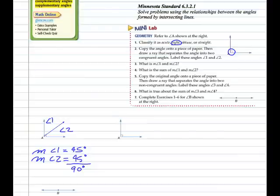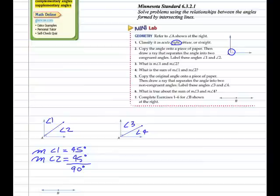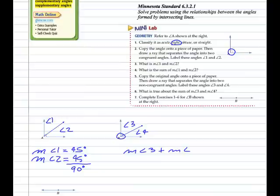Copy the original angle onto a piece of paper, then draw a ray that separates the angle into two non-congruent angles. Here's a copy of the angle again. We'll draw this angle like this — clearly not congruent. We'll call these Angle 3 and Angle 4. Because this is a 90-degree angle, the measure of Angle 3 plus the measure of Angle 4 must equal 90 degrees.